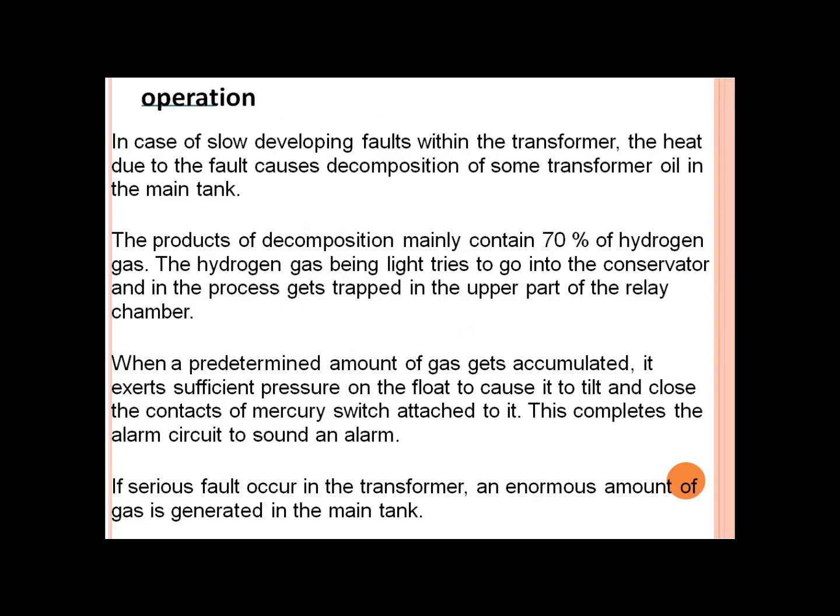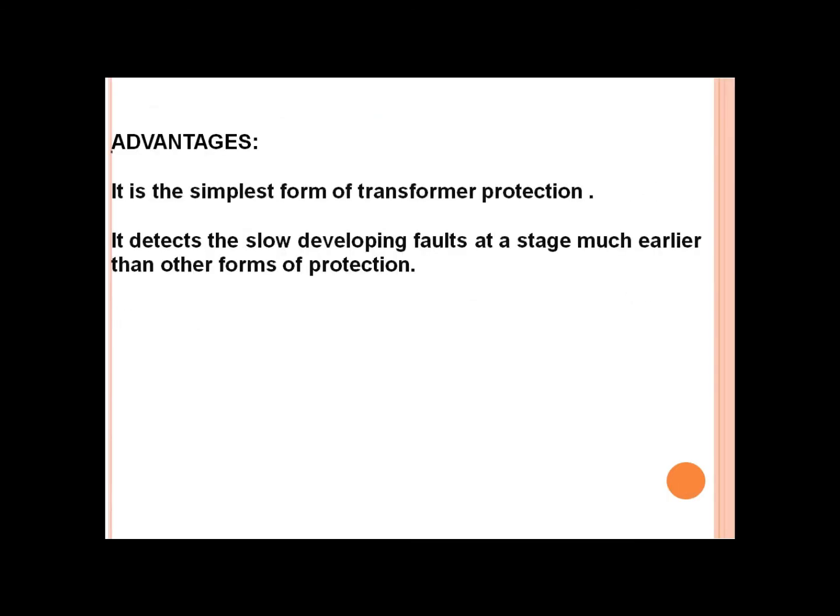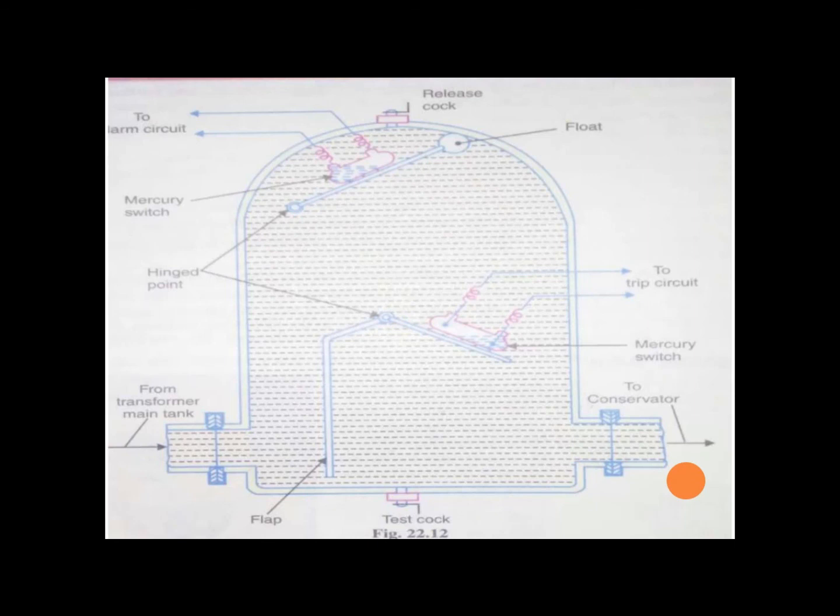What are the advantages? It is the simplest form of transformer protection. It detects the slow developing faults at a stage much earlier than other forms of protection. Sometimes, in the Buchholz relay, there is false detection. Because sometimes, bubbles in the oil cause the upper part of your mercury switch to tilt. So when it is tilted, the contacts are closed, and then there is also an alarm sent when there is bubbling.